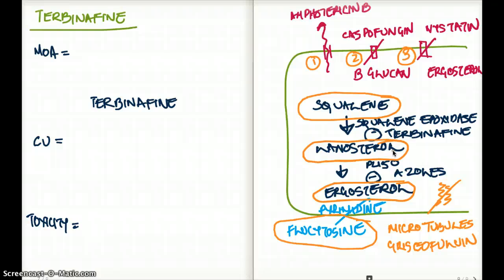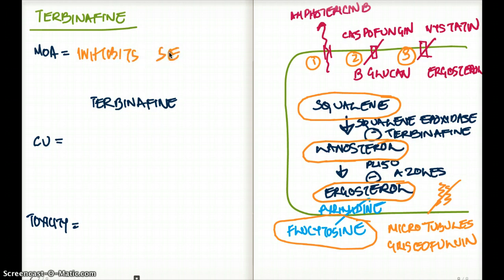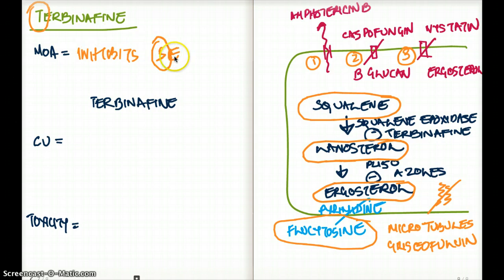Now that was a general overview. Let's talk about the specifics of terbinafine and some clues to help remember it. Antifungal drugs can be a little painful to remember, so let's make it easy. The mechanism of action of terbinafine is inhibiting the enzyme squalene epoxidase. Here's how to remember it: terbinafine starts with T, squalene starts with S — so S-T, the letters follow each other. If you forget what enzyme is inhibited by terbinafine, the letters following each other lead you to squalene epoxidase.